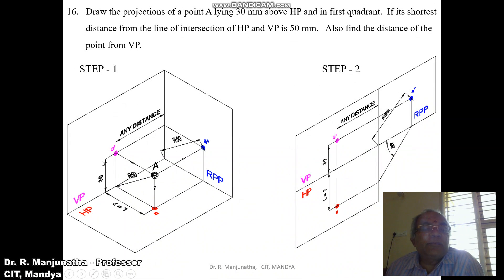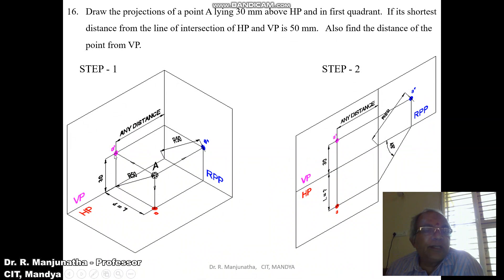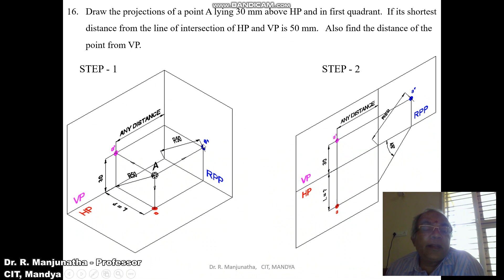The distance with respect to the profile plane, we don't know what it is — any distance can be considered. So we are going to consider any distance here. When you look from the left side view, both A dash and A double dash will lie on the same plane, and this will be the shortest distance.